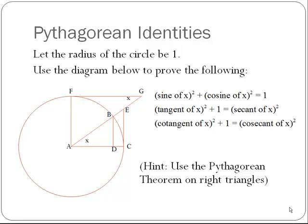There are also other relationships visible in these diagrams. With the radius of the circle being 1, we can prove that sin²(x) + cos²(x) = 1, and there are two other identities involving tangents, secants, cotangents, and cosecants. You can prove these using the Pythagorean theorem, and I strongly urge you to do so.